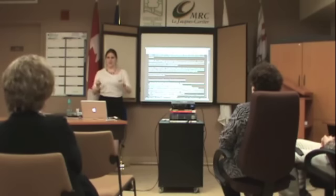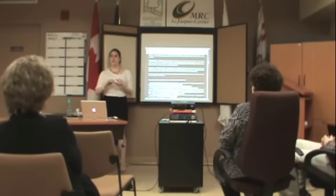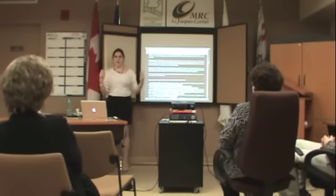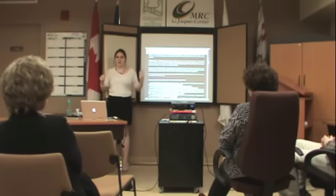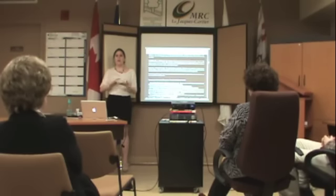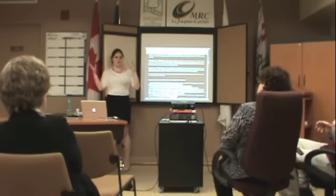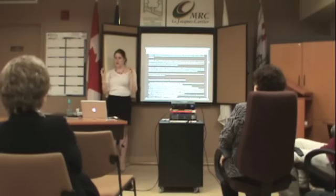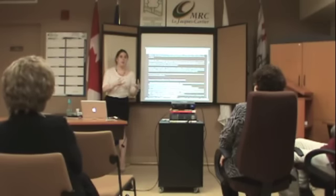Mass is different from weight — that's the first thing you've got to know. The main difference is that mass is always constant, whereas weight changes depending on gravity. My mass is how much stuff I'm made of — how many atoms are inside me. My weight is how much gravity is going to pull on that mass. So my weight can change: if I go to the moon I'm going to lose weight, but I'm not going to lose any mass. Mass is how much matter is in a certain object.